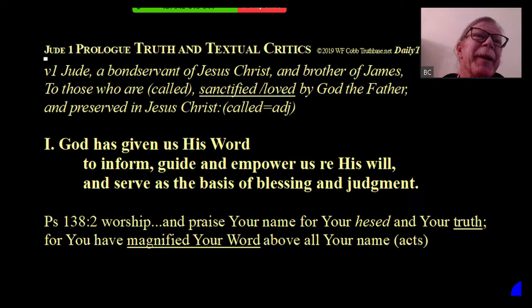Sometimes when they were copying, there'd be an error of hearing, producing a variant. Sometimes a scribe copying two sentences that ended in the same phrase would skip one thinking he'd already gotten it. One of the things in textual criticism is you want to determine which reading explains the other, and which one is more difficult. The one that can explain the other and is more difficult is usually more correct. Being able to do the internal argument is far better. These ancient versions are like 200 years older than the Greek manuscripts.